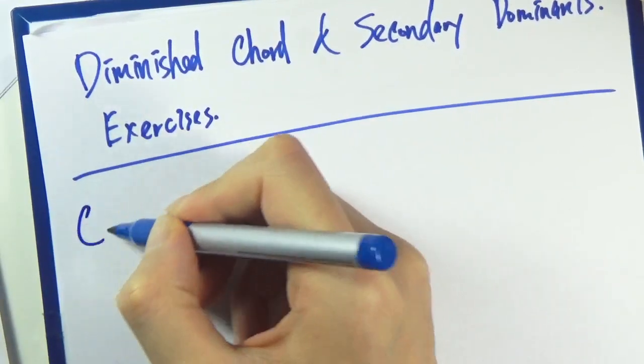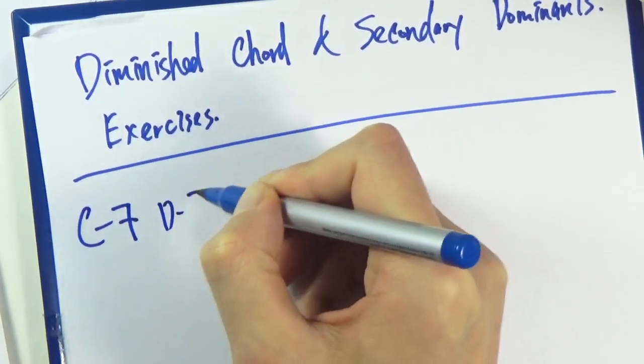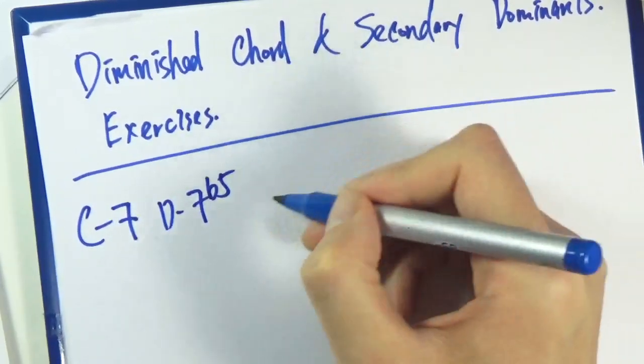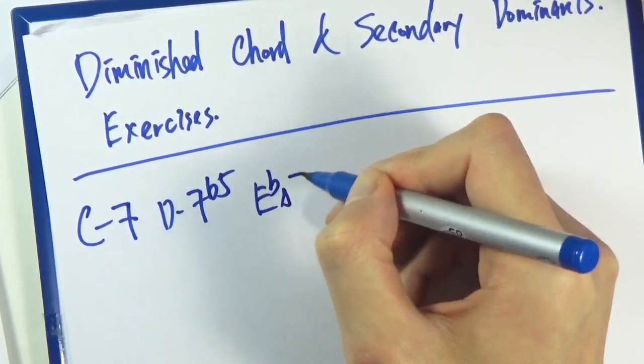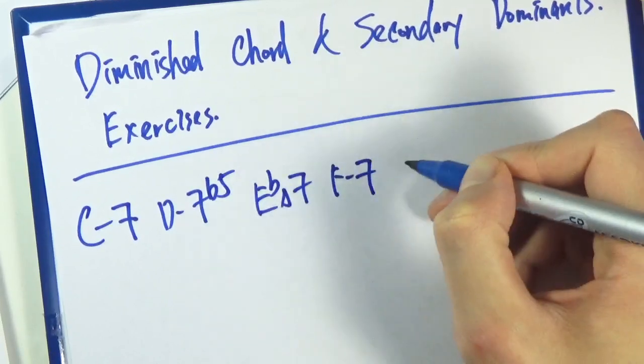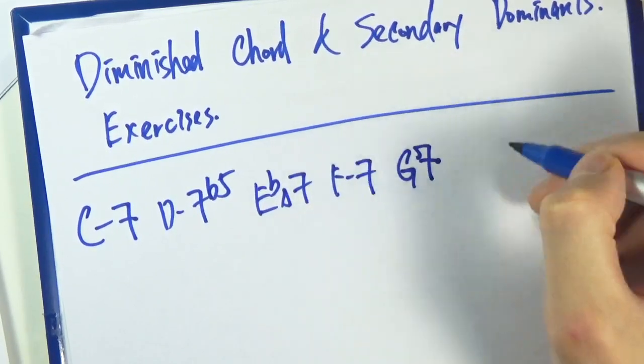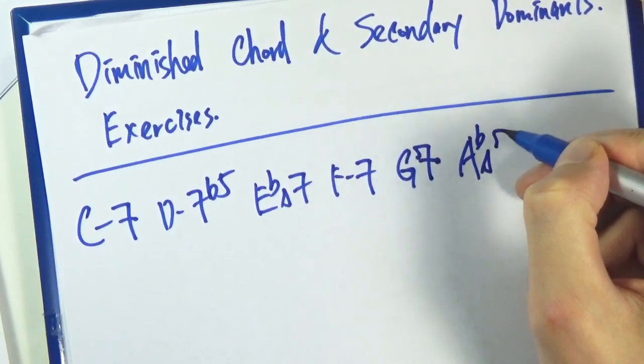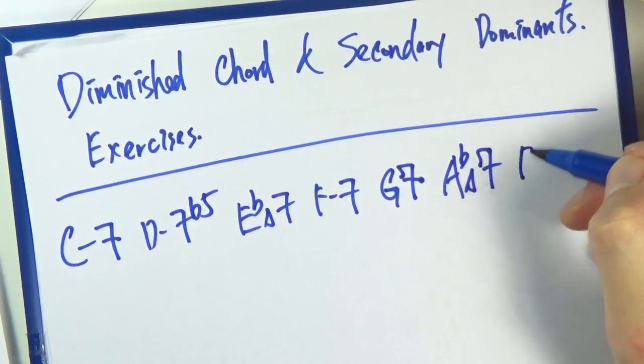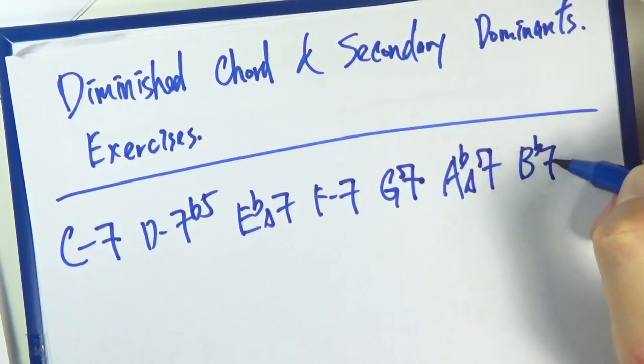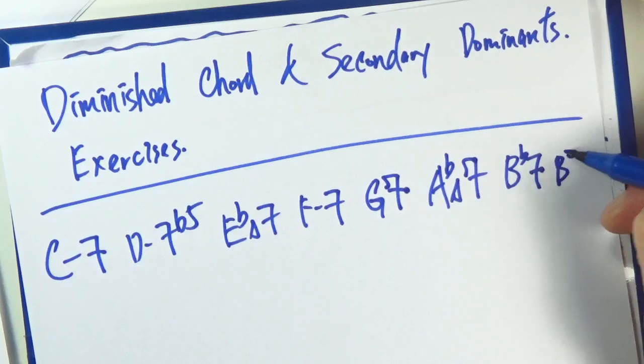So let's start with C minor. C minor 7, D minor 7 flat 5, Eb major 7, F minor 7, G dominant 7, harmonic minor here. So Ab major 7, we'll keep the B flat 7 here, and we'll also have B diminished 7.